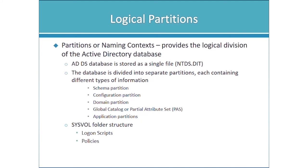The schema partition is a forest-wide partition — there is only one schema regardless of how many domains exist in your Active Directory environment. It defines objects and attributes. The configuration partition is the topology of Active Directory — it defines sites and replication objects, trust relationships, and stores information for Active Directory-integrated applications like Exchange. On the vast majority of days, you would never be going into the schema or configuration partitions — both are forest-wide, meaning there is only one of each in the entire forest.